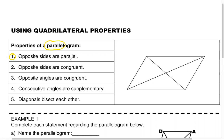Parallel has nothing to do with length, but everything to do with slope. So if you can see that the left side is running in the same direction as the right side, they're parallel. That is denoted with an arrowhead — a single arrowhead on each side shows that this pair is parallel, running in the same direction, the same slope.